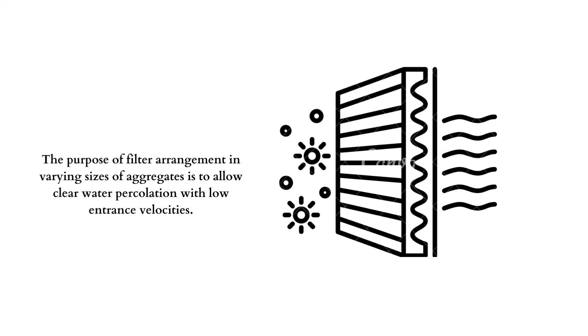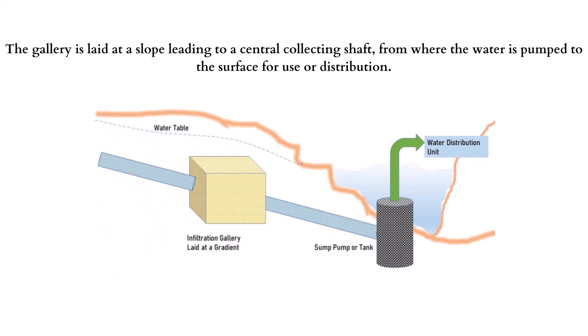The filter medium is typically made of gravel, but it can be improved based on available technologies. The purpose of the filter arrangement with varying aggregate sizes is to allow clear water percolation with low-risk velocities. The gallery is laid at a slope leading to a central collecting shaft from which the water is pumped to the surface for use or distribution, making the gravitational flow and movement of water easier.